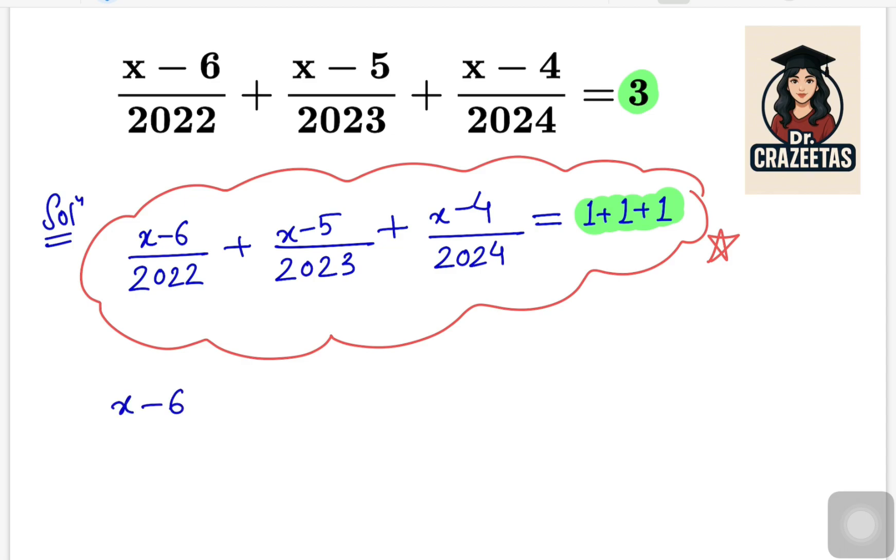So in the next step, we are writing the left hand side terms first: x minus 6 over 2022, x minus 5 over 2023, x minus 4 over 2024. And now I am writing all the ones assigning to each fraction. So on the right hand side it is plus, so on the left side it will become minus 1, minus 1, and minus 1. And on right side it will be 0.